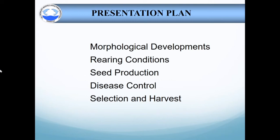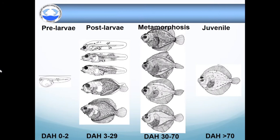Let's start with morphological development. We can classify the turbot larvae in three main stages as they transfer from larval stage to juvenile stage: prelarval stage, postlarval stage, and metamorphosis. Prelarval duration is from day zero to two, so only three days. Postlarval stage duration is from day three to about 30. Metamorphosis duration is from day 30 to about 70.